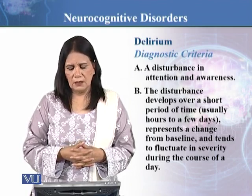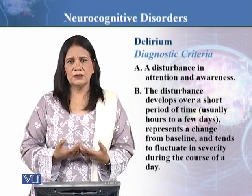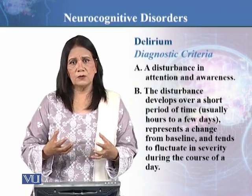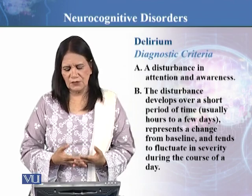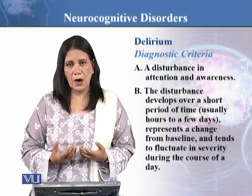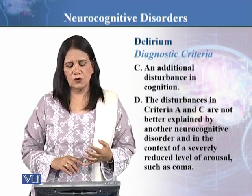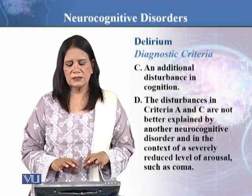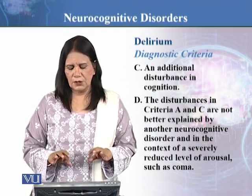It represents a change from baseline — meaning where the person was from a cognitive point of view, when they were okay with memory and fully aware of their surroundings. It tends to fluctuate in severity during the course of a day — it can be marked and fluctuate to extreme severity within a day. Criterion C is an additional disturbance in cognition — it is a confused state but also a disturbance in cognition. The disturbances in criteria A and C are not better explained by another neurocognitive disorder or by a severely reduced level of arousal such as coma.